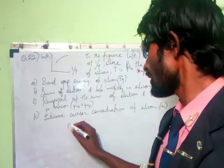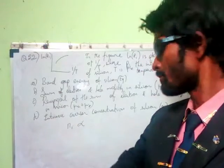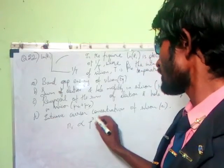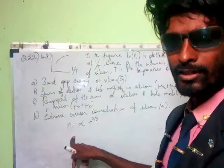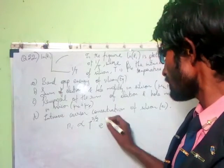This n_i (intrinsic carrier concentration) is proportional to T^(3/2) into e^(-E_g/kT), where E_g is the energy gap divided by kT.